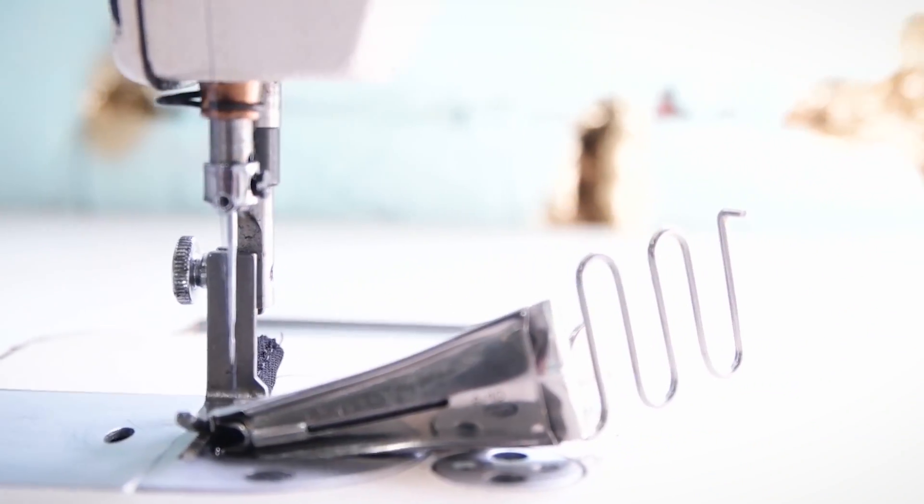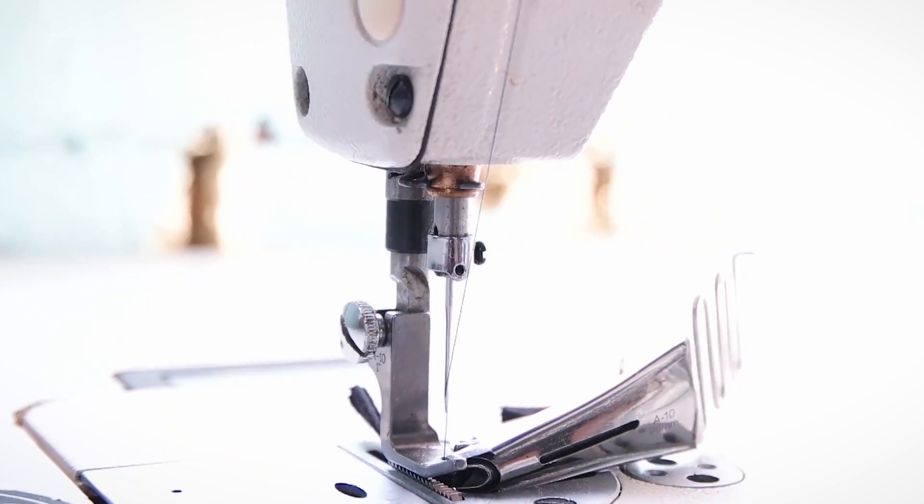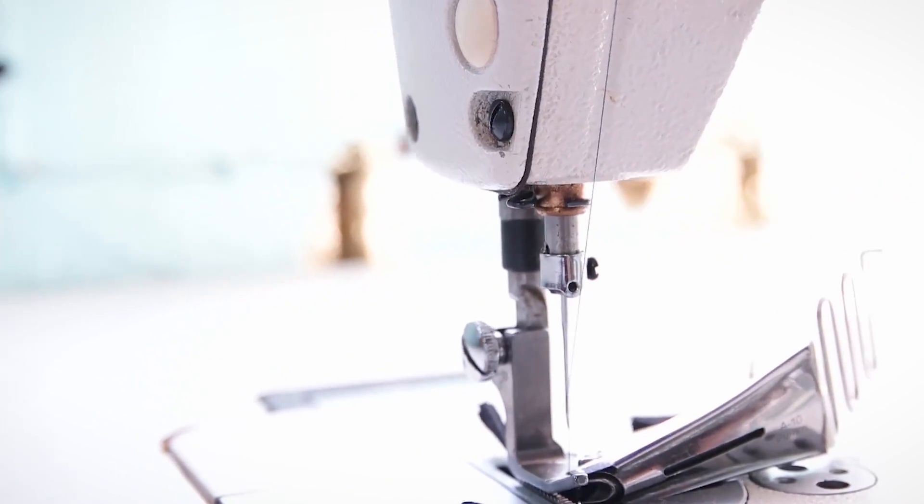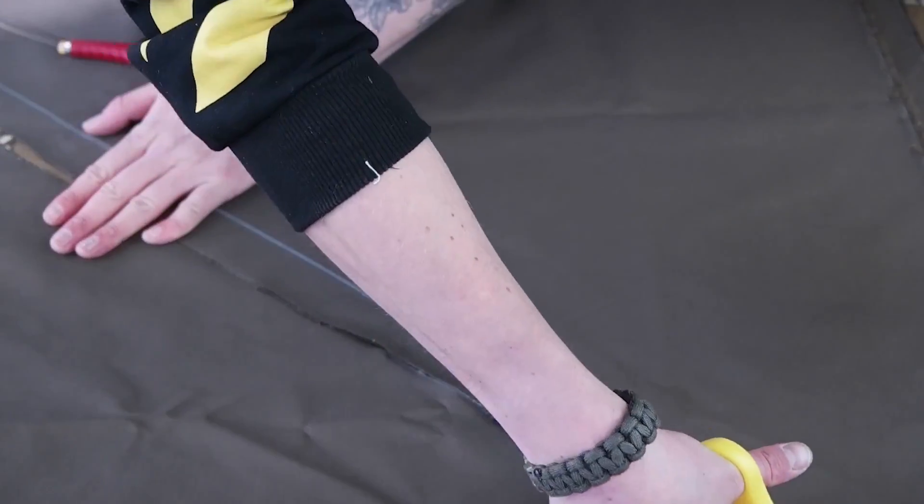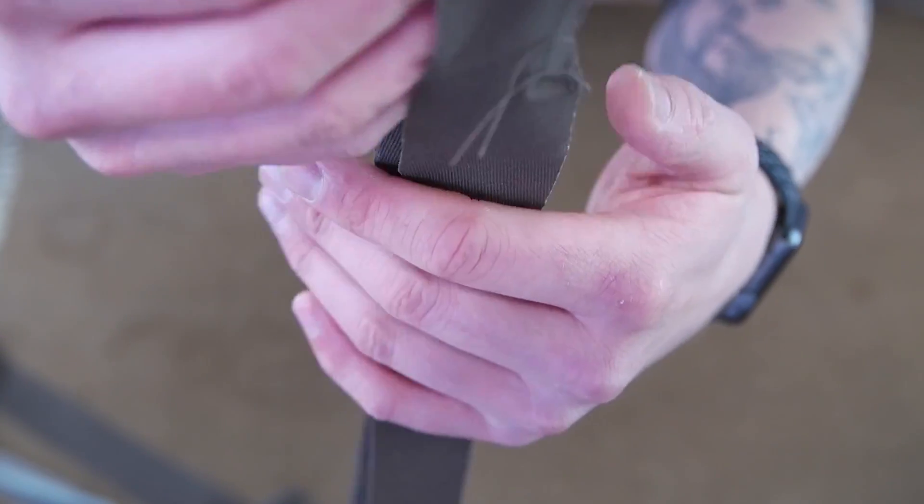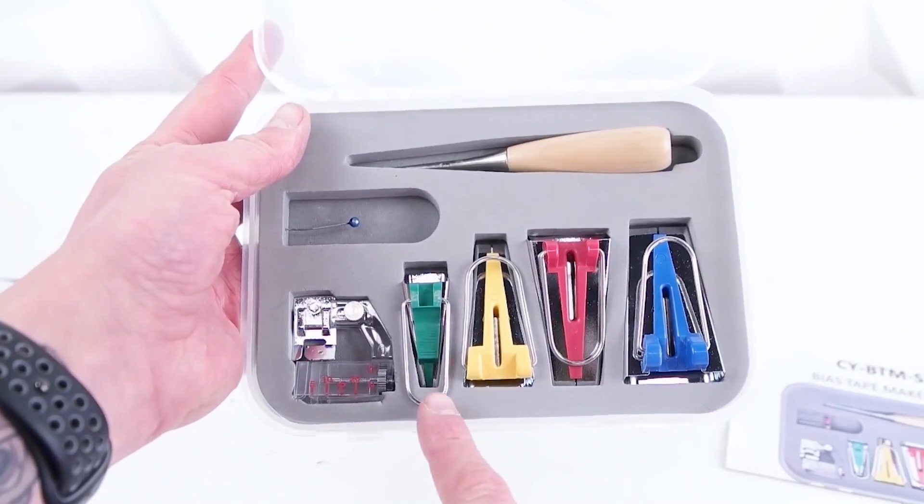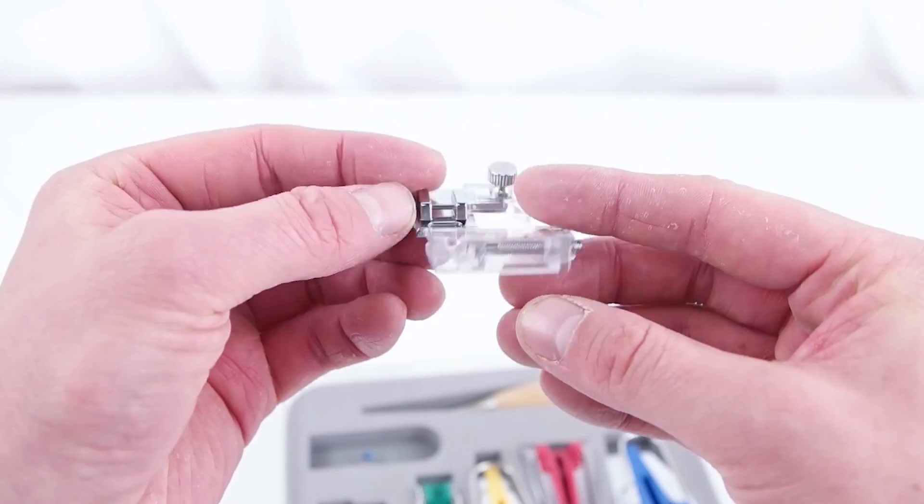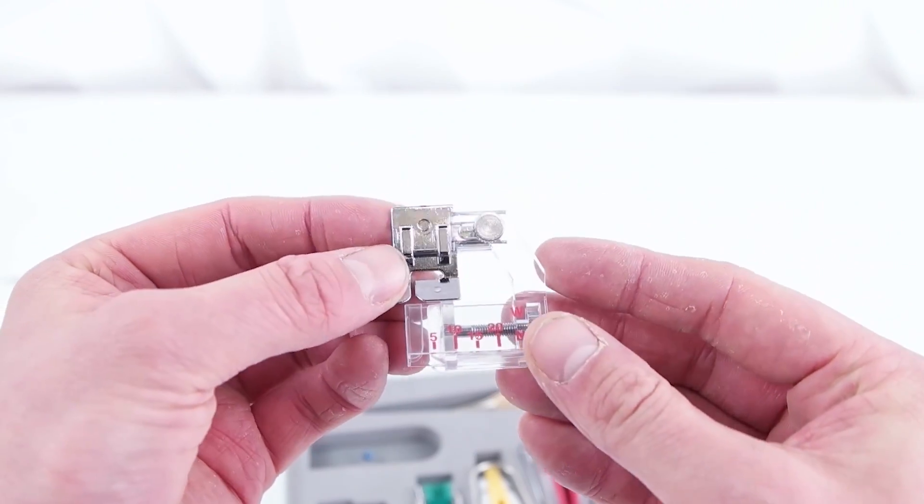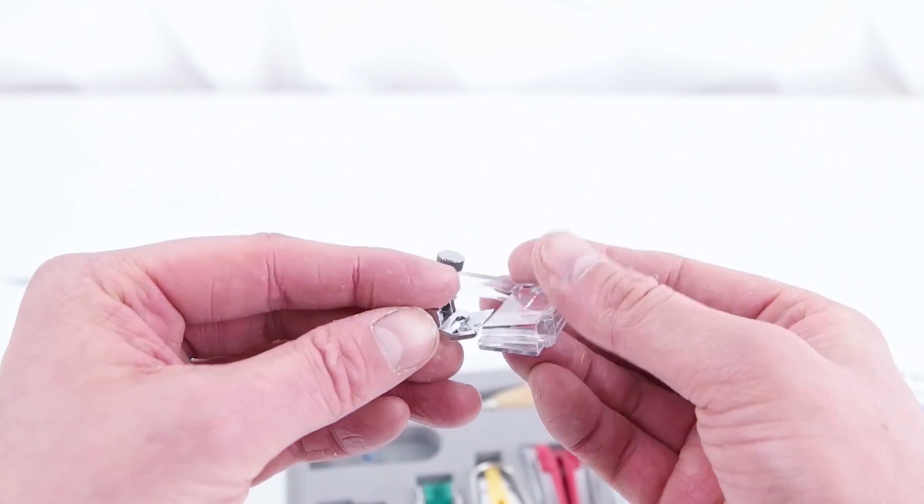We're gonna be using a double fold bias tape binder to clean up those edges, and you can definitely get these for domestic sewing machines too. We're gonna have links in the description. Cut out long pieces of bias tape that are the right measurements to the width of your binder. The other option is to use a bias tape making kit where you pretty much just make your own bias tape. It comes with the presser foot that helps you attach the bias tape to your garment.